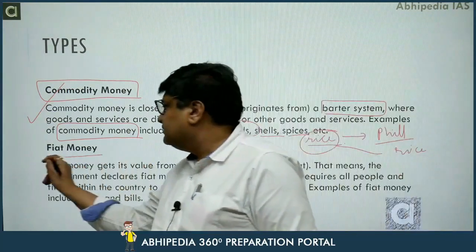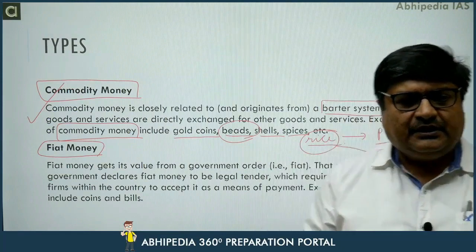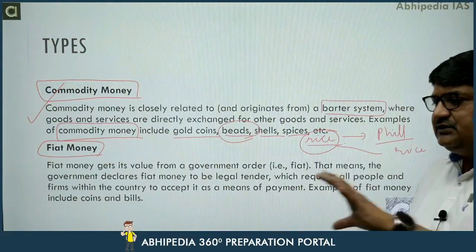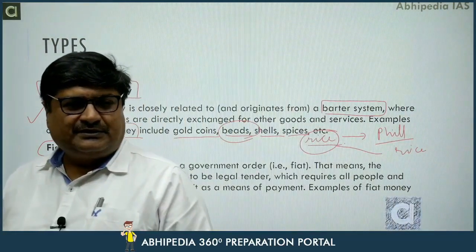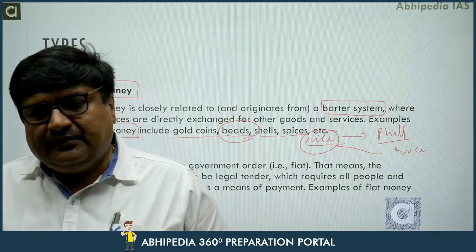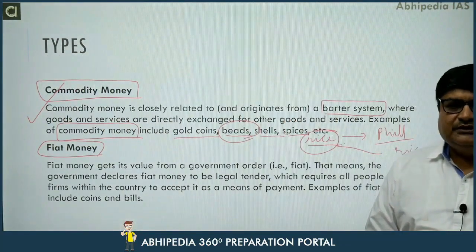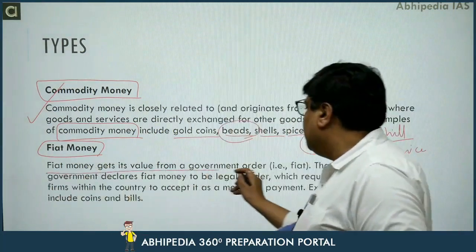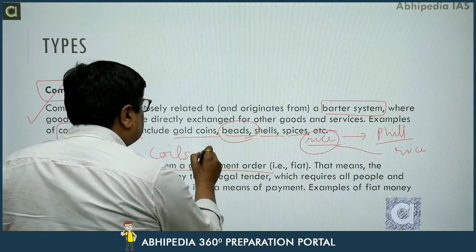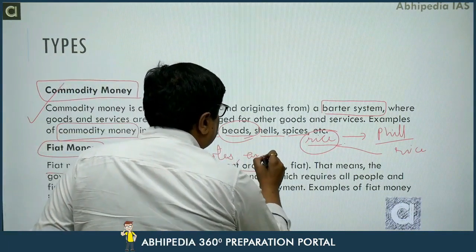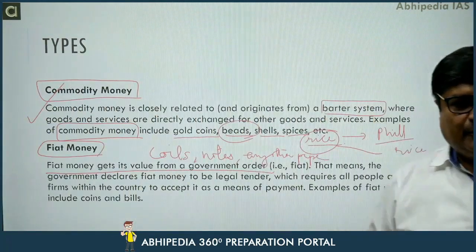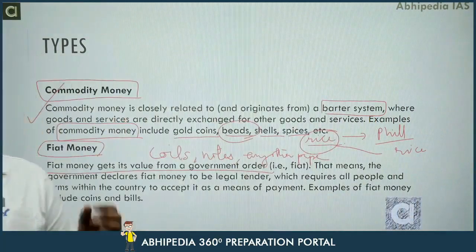The second type of money is fiat money. Fiat money is money or anything which draws its value from a government order. If the government says that this paper or this coin has a value of 100 rupees, then that paper will be considered to hold 100 rupees in value. Any money which gets its value due to a government order is known as fiat money. All coins, all notes, or any other paper which has value due to government order — which can be used as a medium of exchange and as a medium of valuation — will be called fiat money.